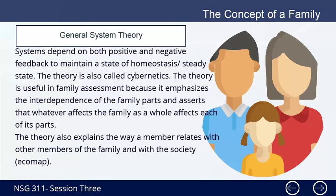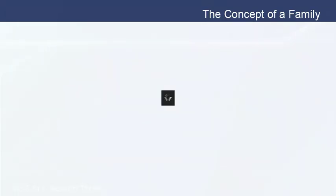3. General System Theory — systems depend on both positive and negative feedback to maintain a state of homeostasis, or steady state. The theory is also called cybernetics. The theory is useful in family assessment because it emphasizes the interdependence of the family parts and asserts that whatever affects the family as a whole affects each of its parts. The theory also explains the way a member relates with other members of the family and with society.